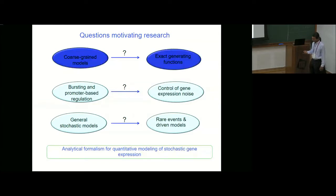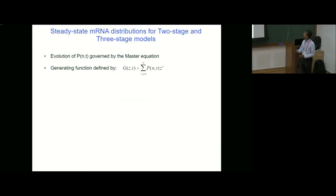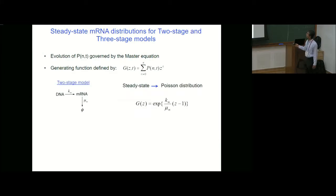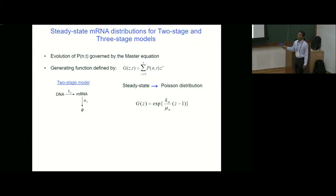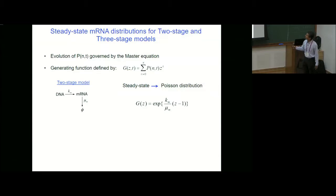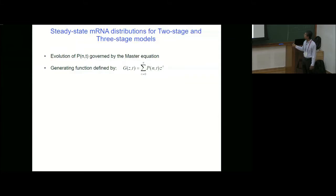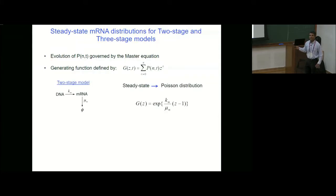For the simple two-stage model — production of mRNAs occurring as a Poisson process, each mRNA degrading at a constant rate — the evolution is governed by the master equation, and we can look at the corresponding generating function. It's straightforward to write down the master equation and solve it for the steady state, obtaining a steady-state distribution which is a Poisson distribution. For the three-stage model, it's a little bit more involved but again tractable. You take the three-stage model where the DNA goes from active to inactive stages, and the steady-state generating function is the confluent hypergeometric function.